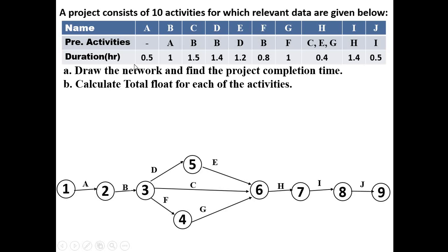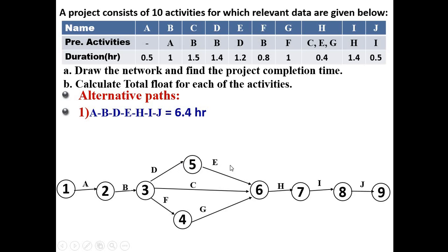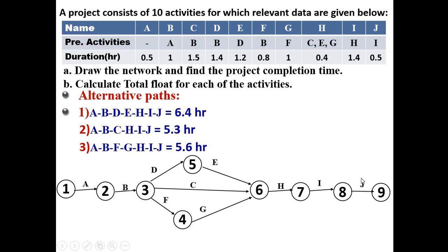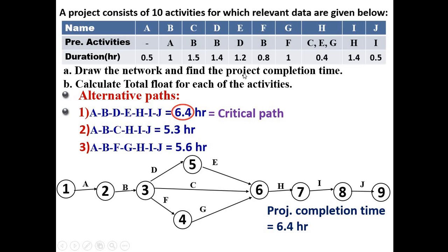This is the first task completed. Now in the second part, we find the project completion time by listing all alternative paths from the network diagram. Path 1: A, B, D, E, H, I, J. Path 2: A, B, C, H, I, J. Path 3: A, B, F, G, H, I, J. Summing the durations for each path, we pick the maximum time, which is 6.4 hours — that is the critical path. The minimum time required to complete the whole project is 6.4 hours, shown as a double line in the network diagram.